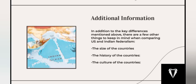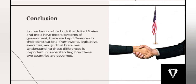There are some additional factors to keep in mind while comparing the two countries on the basis of federalism. First, the size of the countries — the US is a much larger country than India in terms of land area and population, so the national government in the US has a much larger bureaucracy. Second, the history — the US has a much longer history of federalism than India, making its system more established and stable. Third, culture — the US and India have very different cultures, which can lead to different attitudes towards federalism.